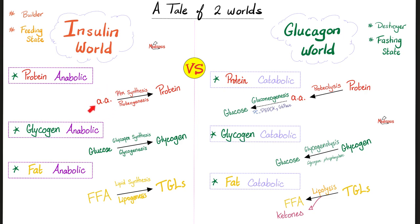Protein anabolic means building those amino acids into big proteins — called protein synthesis or proteogenesis. Then build those small glucose molecules into big glycogen particles — glycogen synthesis or glycogenesis. Third, build those free fatty acids into triglycerides via lipid synthesis or lipogenesis.